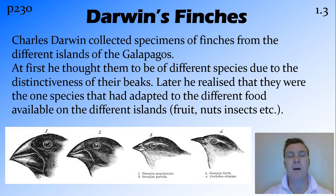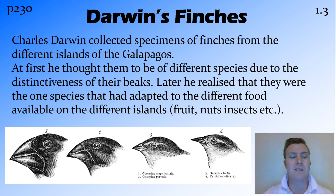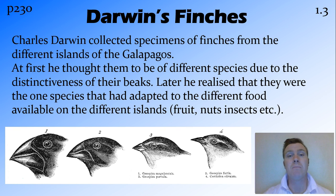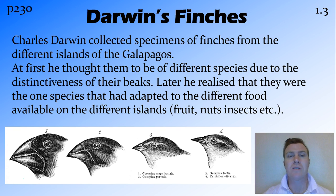One of the most famous examples of this is Darwin's finches. When Darwin went to the Galapagos on his trip around the world on the Beagle, he collected these different birds and actually thought they were different species of finches, because in particular the beaks of these birds were markedly different. But when he got them back and studied them further, he found that they're actually all the same species.